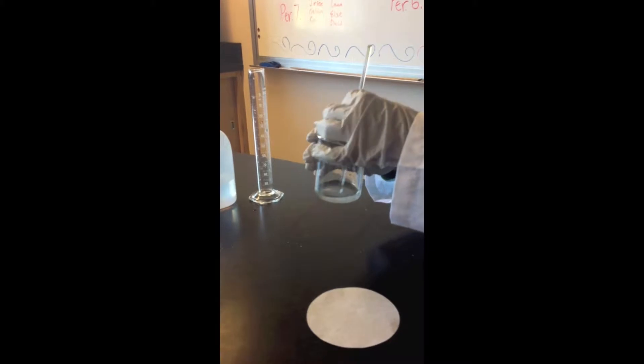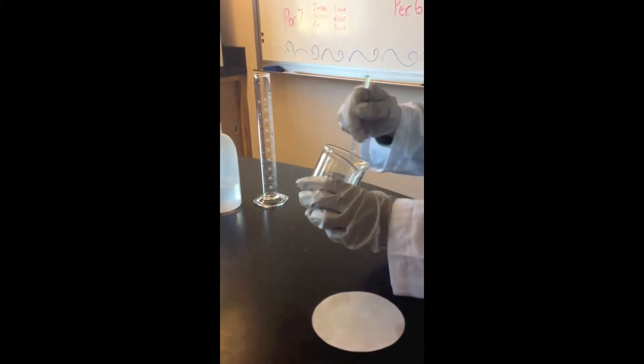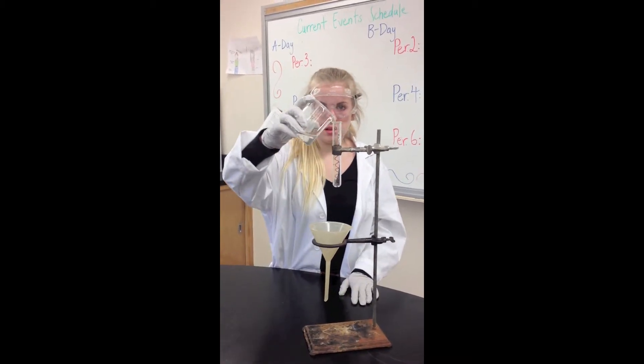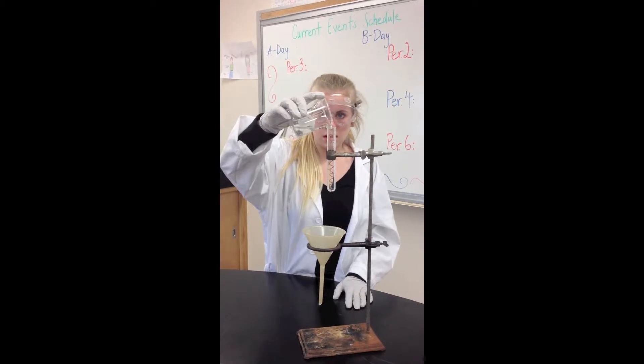Using the stirring rod, mix the water and Silver Nitrate until it's completely dissolved. Pour the Silver Nitrate solution into the test tube with the copper coil. Wait about 30 minutes until the reaction occurs.